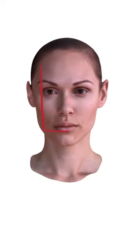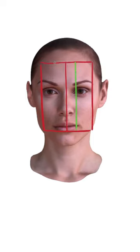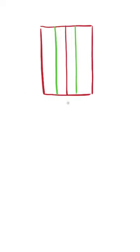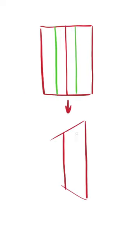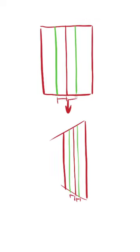If we look at the face from the front, we can draw a rectangle around the eyes like this. I'm also placing two lines here to mark where the eyes are. As this plane is rotating away from us, you can see how it's getting less wide and how the eye lines are getting closer to the center line.